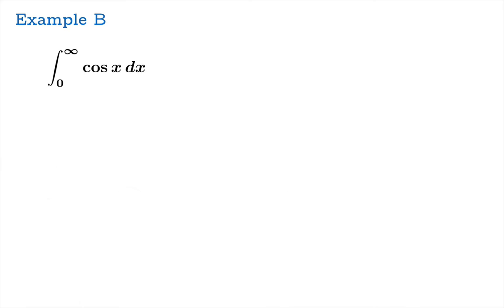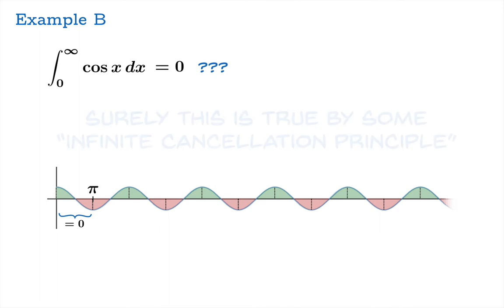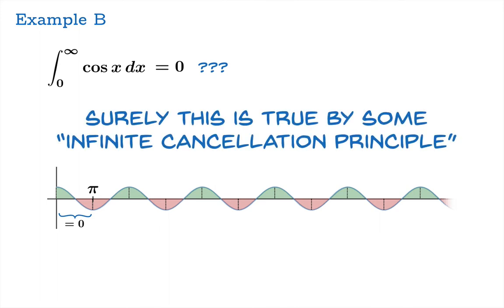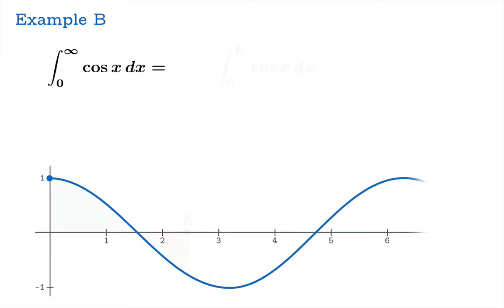Let's try the integral of cosine from 0 to infinity. Looking at the graph, we notice the areas cancel on the interval from 0 to π, and if we keep moving π units to the right, we find regions that cancel. You might think this integral is surely 0 because all the areas cancel by some infinite cancellation principle. But intuition should not take the place of the official definition. In calculus you have to be very careful with infinite calculations, so we must define the integral by taking the integral from 0 to k and then looking at the limit as k goes to infinity.